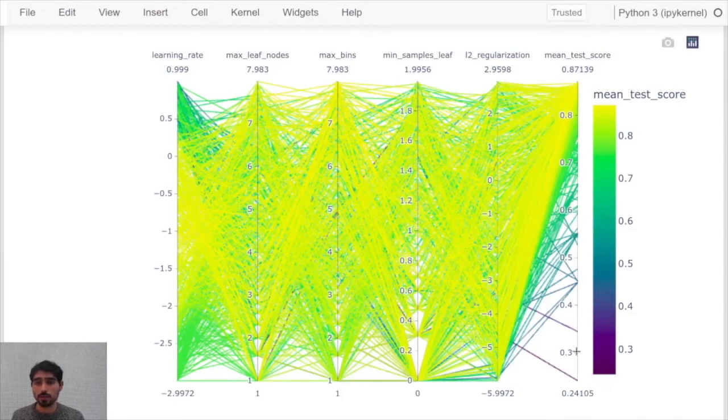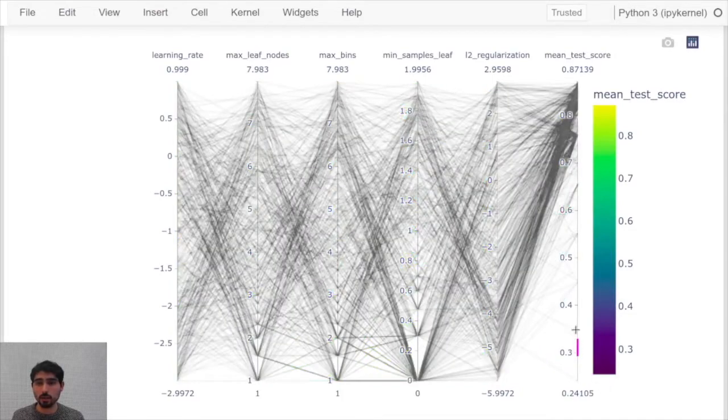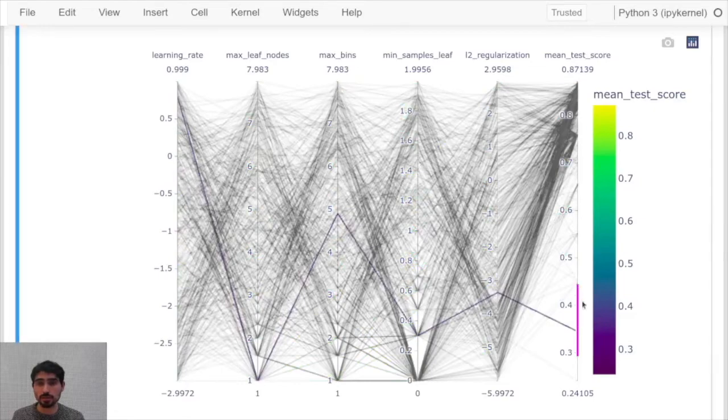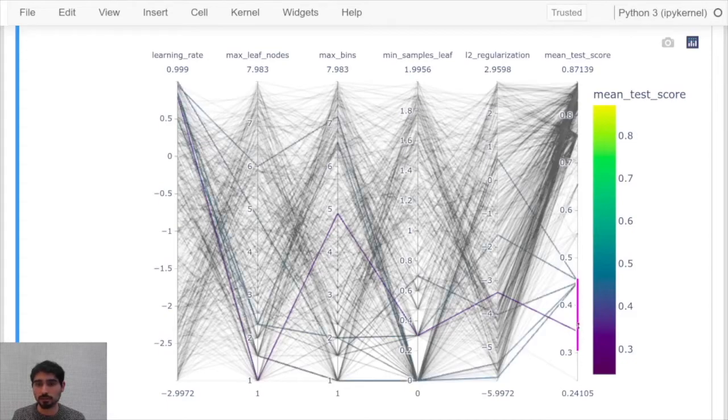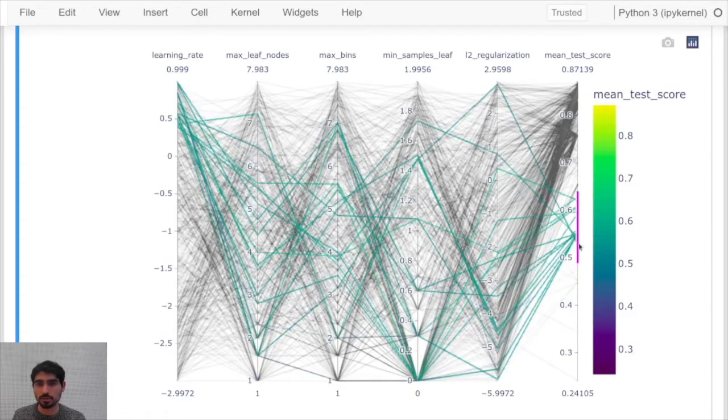You can click on any of the axes and if you click and hold you can select a range of scores, for instance here, and ask yourself which combination of hyperparameters will lead me to this bad score. You can also click and drag the selection and ask yourself the same like what are the combinations leading to a medium score.